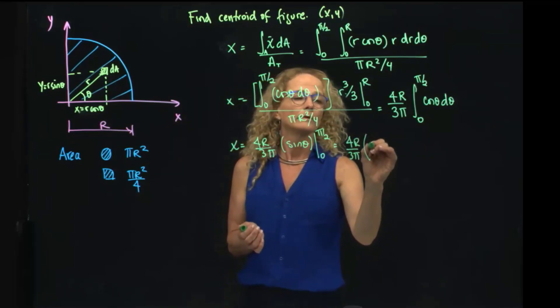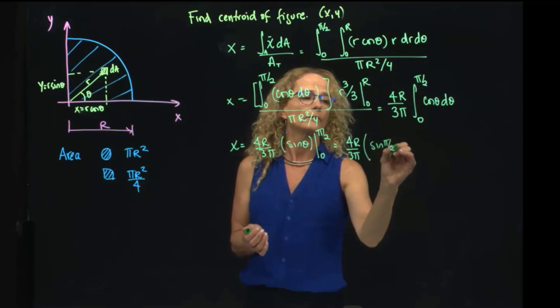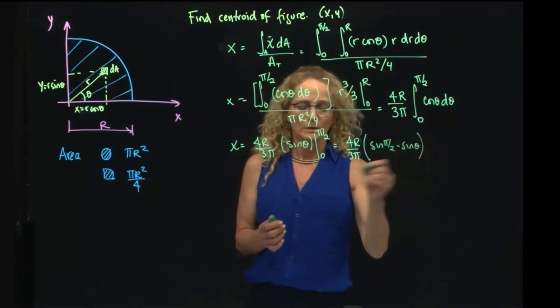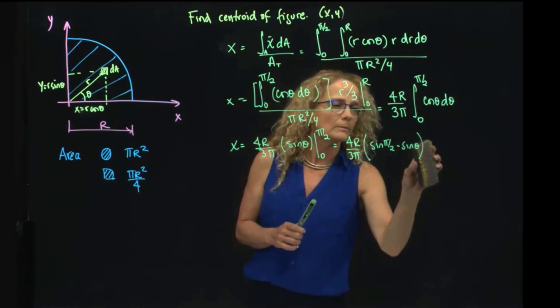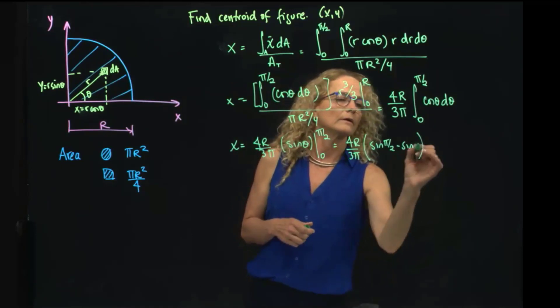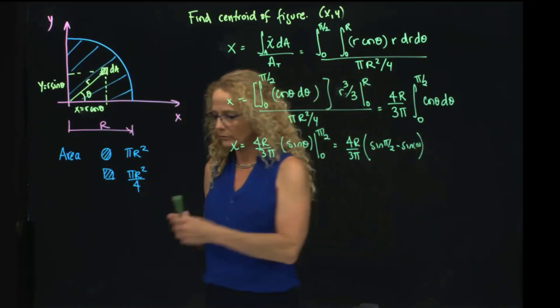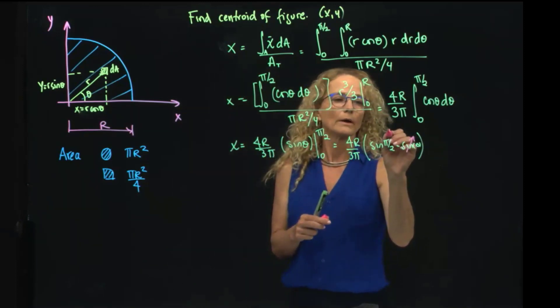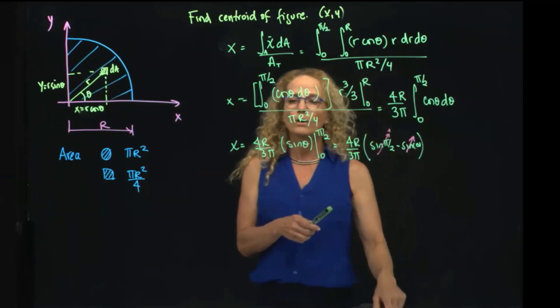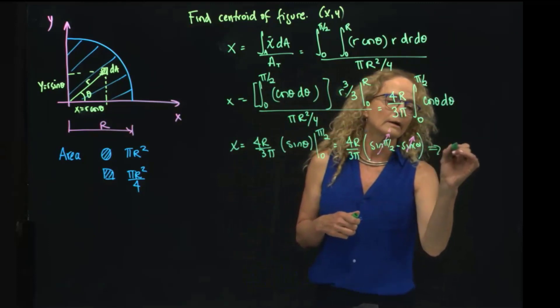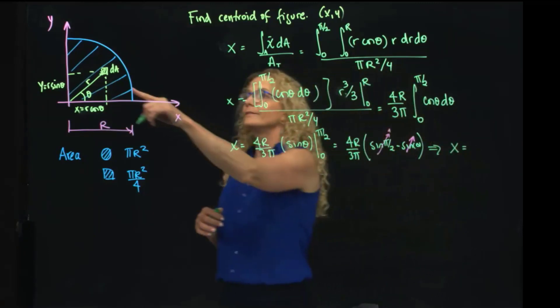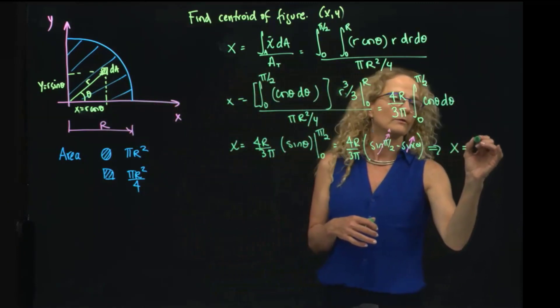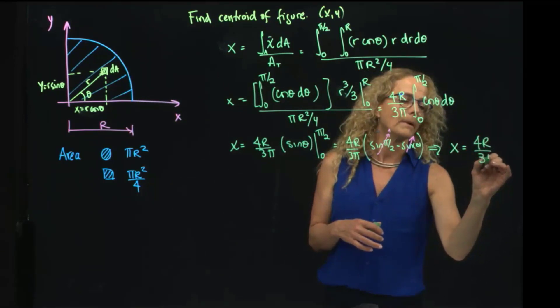That gives me 4r over 3 pi, sine of pi half minus sine of 0. Sine of 0 is equal to 0, and sine of pi half is equal to 1. Therefore, I found that the centroid of that figure is 4r over 3 pi.